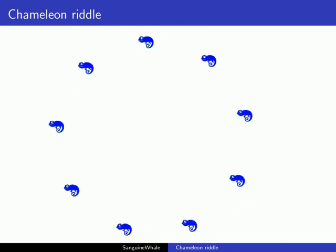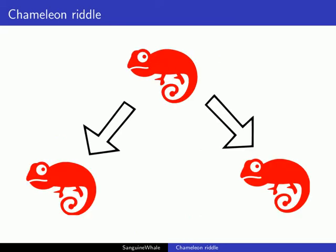After each minute, a bell chimes. When the bell chimes, each chameleon looks at its neighbors and changes its color accordingly. If both neighbors have the same color, the chameleon will change to that same color.